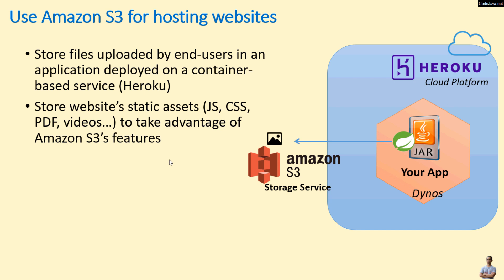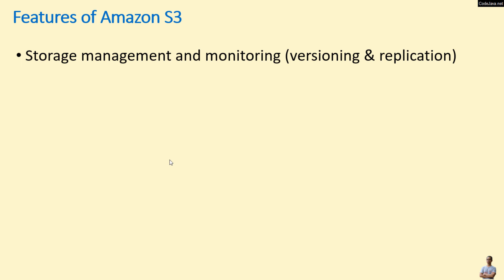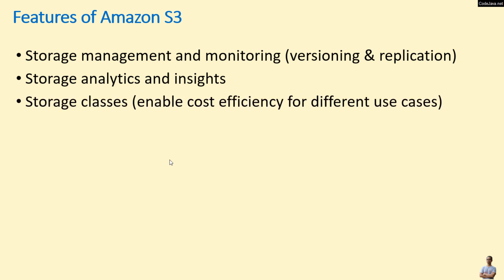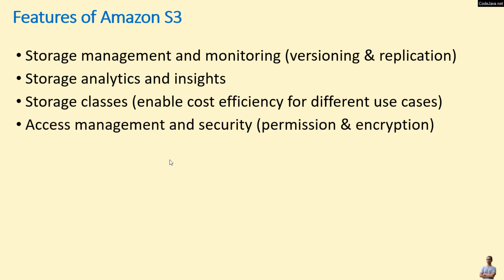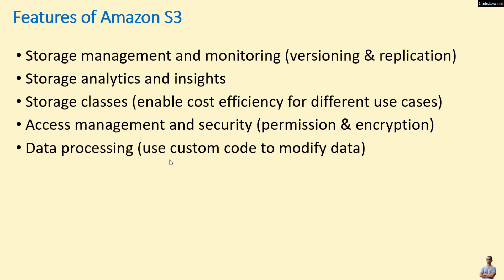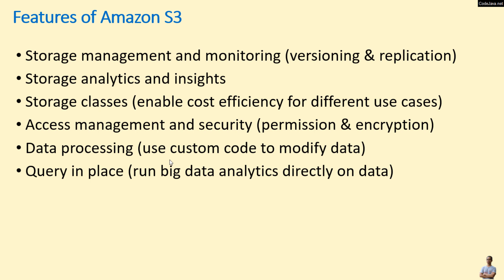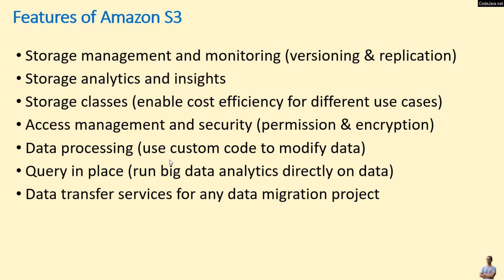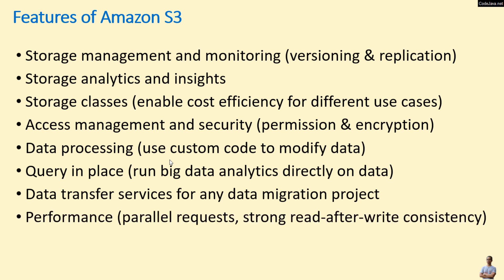Here are the main features of Amazon S3. First and foremost is storage management and monitoring, including versioning and replication, storage analytics and insights, and storage classes which enable cost efficiency for different use cases. Next is access management and security with granular permissions and encryption. Also, data processing — for example, using custom code to modify data, and query in place to run big data analytics directly on the data. Finally, data transfer services for any data migration project, online or offline.